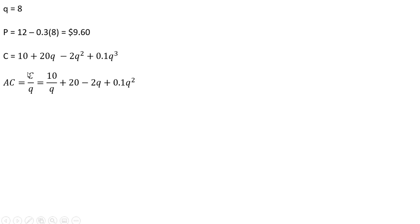For average cost, we're going to take our cost equation and divide that through by q, dividing each term by q. Now evaluating average cost at 8 units of output, this firm has an average cost of $11.65 at 8 units of output.